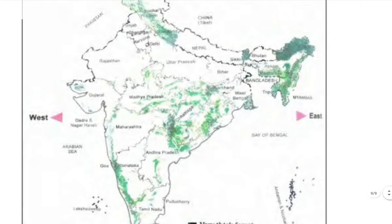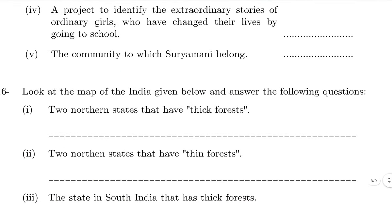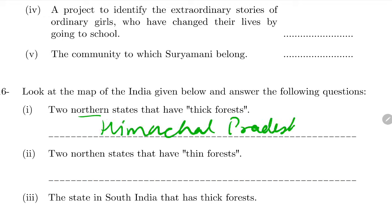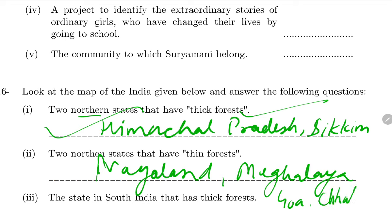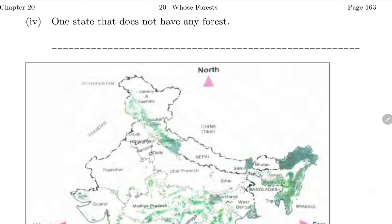Map-based questions from the NCERT map: Name two northern states with thick forest - Himachal Pradesh and Sikkim. Name two states in north India with thin/less forest - Nagaland and Goa (or Chhattisgarh). Name one state that does not have any forest - Haryana.